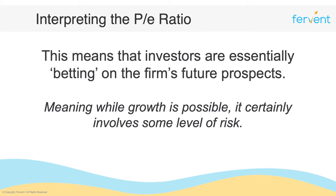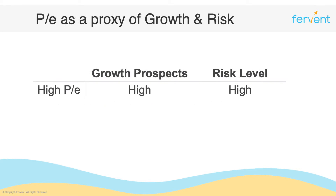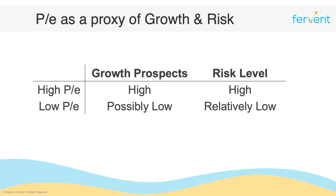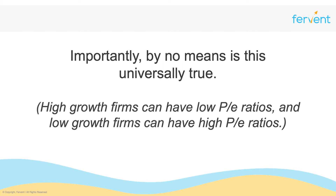So if you see the P/E as a proxy for growth and risk, firms with high P/E ratios tend to have high growth prospects and also carry a high level of risk. On the other end of the spectrum, firms with low P/E ratios may have lower growth prospects and relatively low risk levels. By no means is this universally true — you can have high growth firms with low P/E ratios, and low growth firms with high P/E ratios, and we'll see real-life examples of both throughout the course.